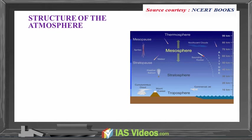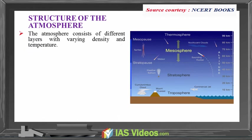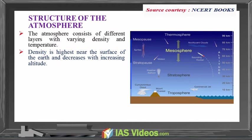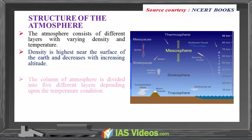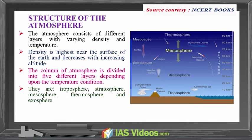The atmosphere consists of different layers with varying density and temperature. Density is highest near the surface of the earth and decreases with increasing altitude. The column of atmosphere is divided into five different layers depending upon the temperature condition: the troposphere, stratosphere, mesosphere, thermosphere and exosphere.